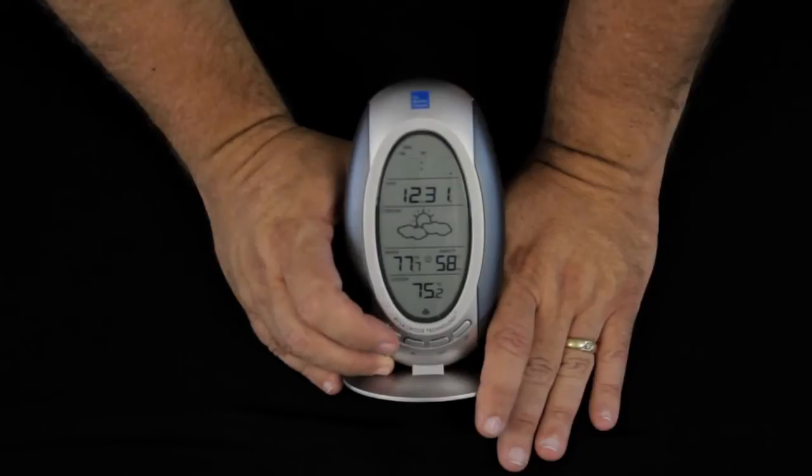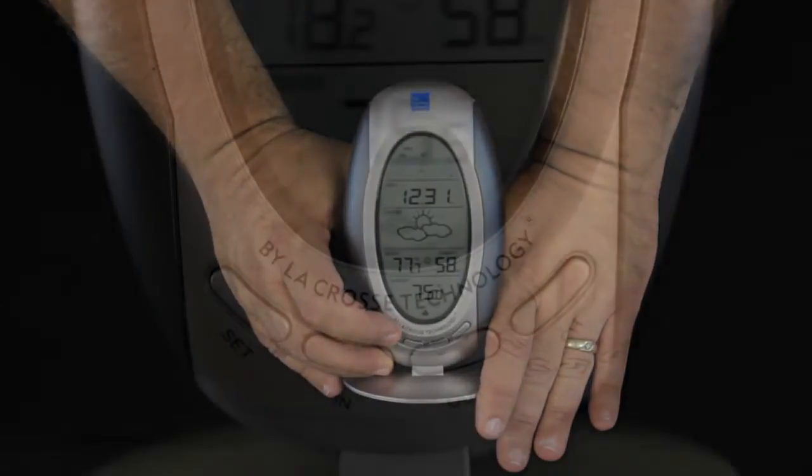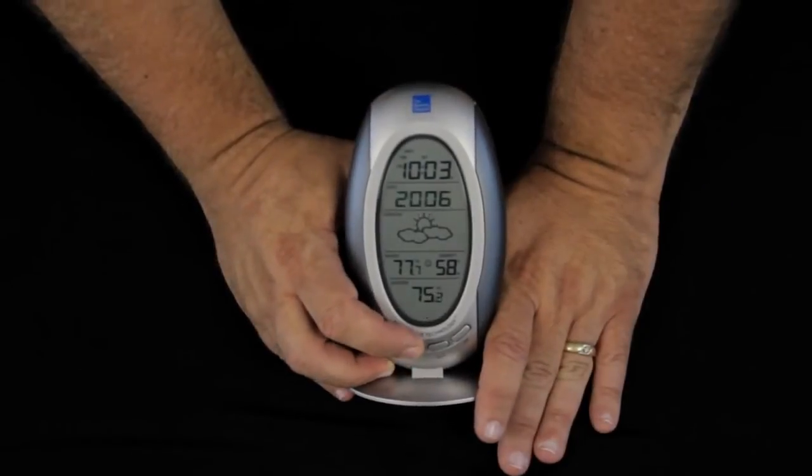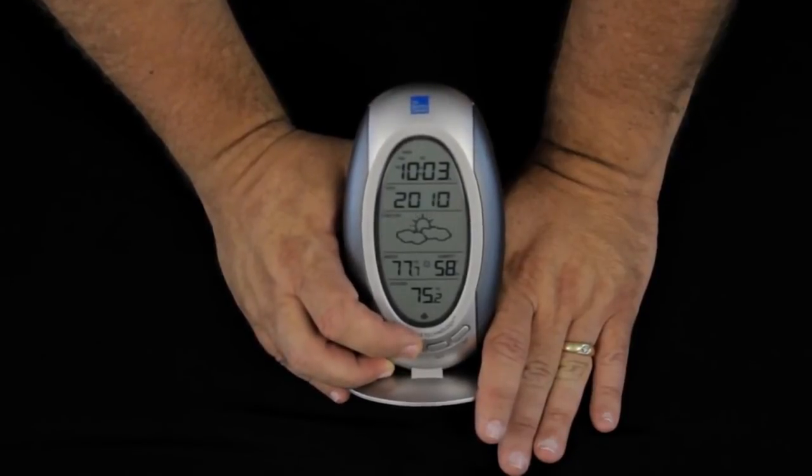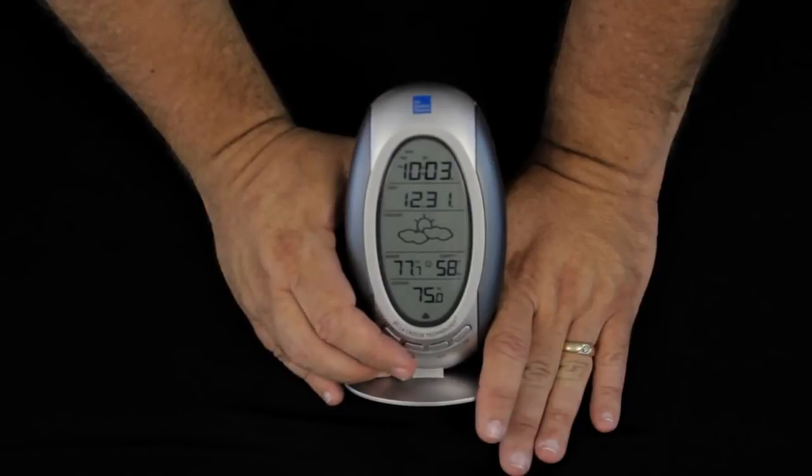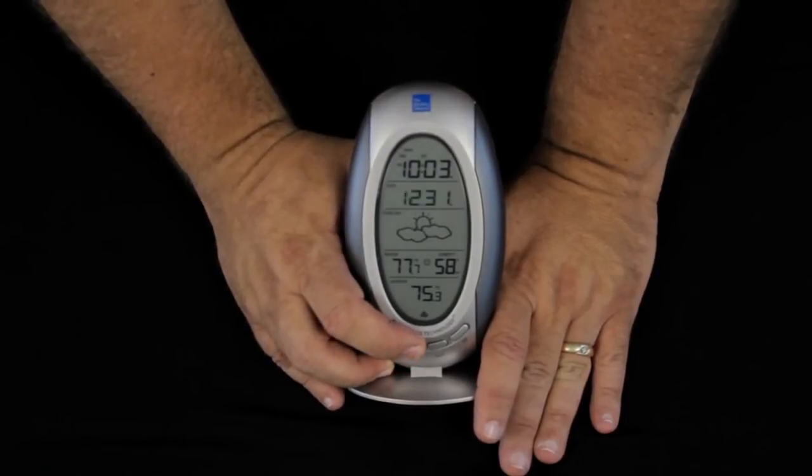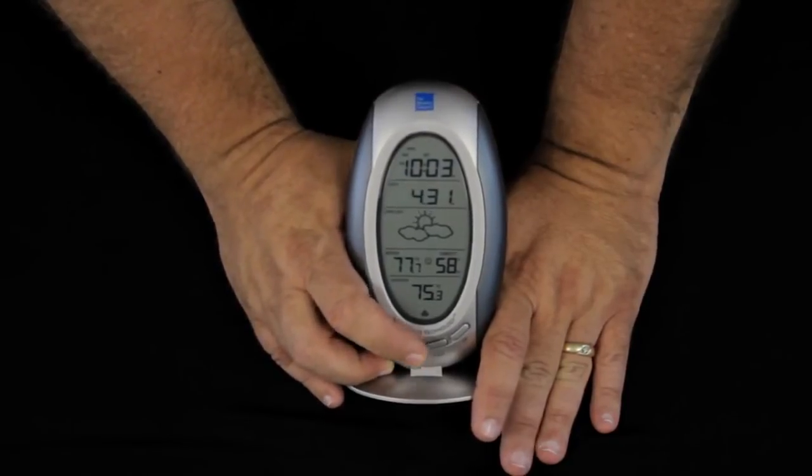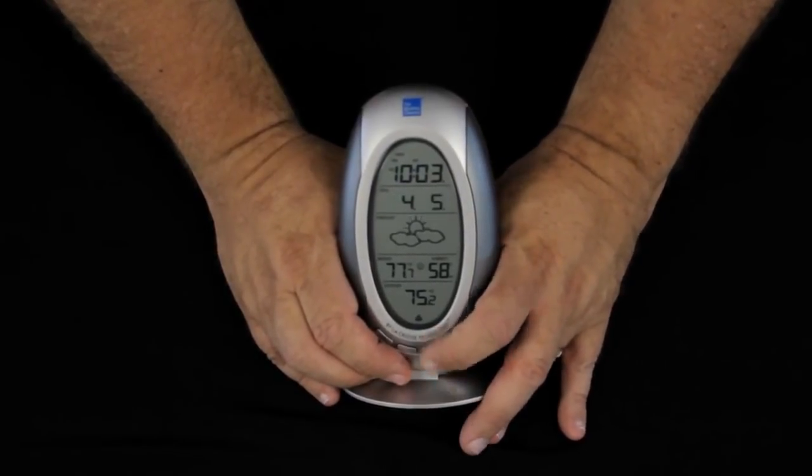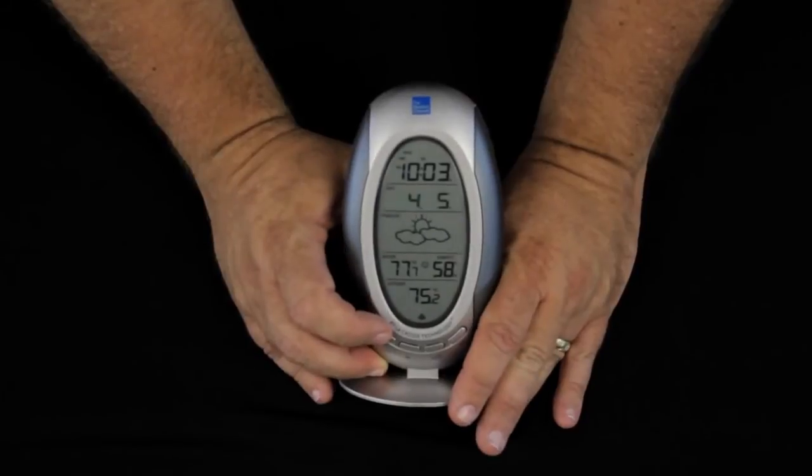Pressing once again. The time is flashing. We can manually set the time using the in and out buttons. Pressing the set button again has a flashing year. By pressing the in button, we can adjust to the correct year. Press the set button once again. The month and date are flashing. The in button changes the month. The out button changes the date.